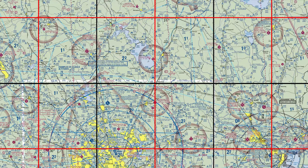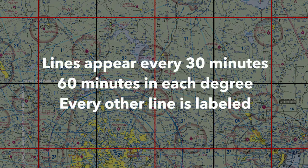If this isn't making sense yet, pause the video and spend a couple of minutes thinking about the layout — it's really not that difficult. Remember that lines appear every 30 minutes, there are 60 minutes in each degree, and every other line is labeled.